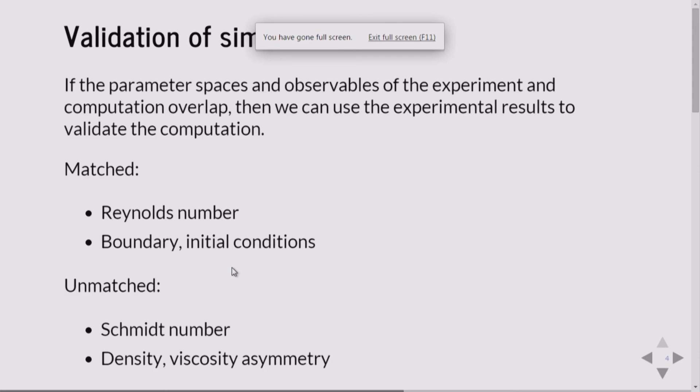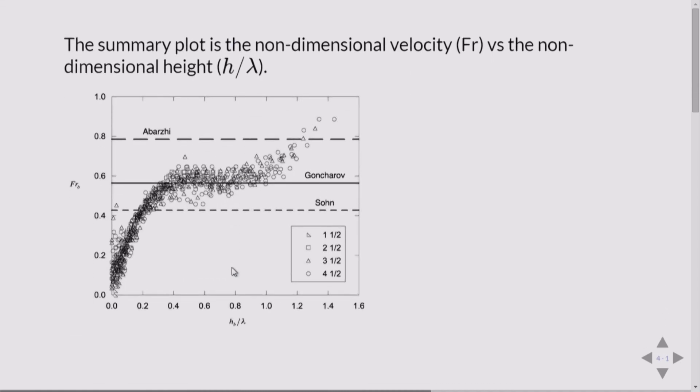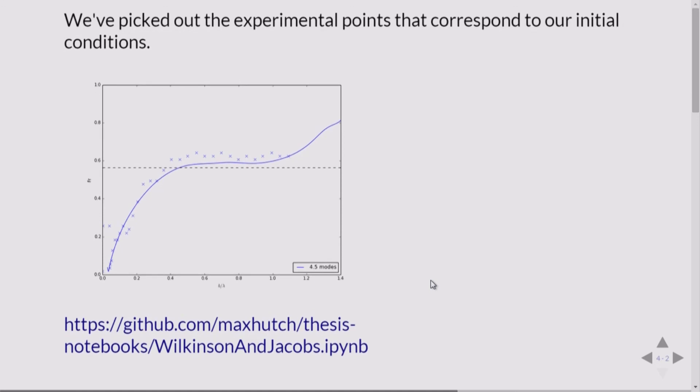So for validation, we have some things that we matched. This is the money shot plot from the paper. We can make our own version of the plot using the particular points that came from the particular initial conditions of the runs that we talked about before. And you can see that the line basically lines up with the points. It turns out we figured out a slightly better way to track the interfaces and we're doing another round of post-processing and early results indicate that we should expect these lines to line up even better.